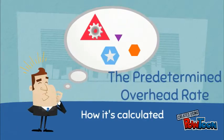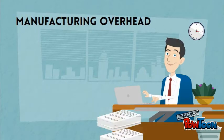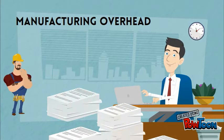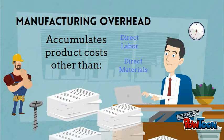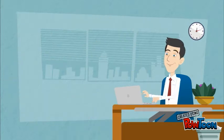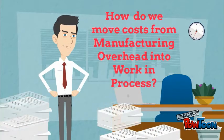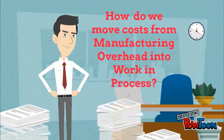Let's talk about the predetermined overhead rate and how it's calculated. The manufacturing overhead account is accumulating costs during the year as invoices arrive and are paid. Remember, this account is where all product costs other than direct materials and direct labor are accumulated. So then the question is, how do we move costs that are not easily traceable to the finished product out of manufacturing overhead and into work in process?